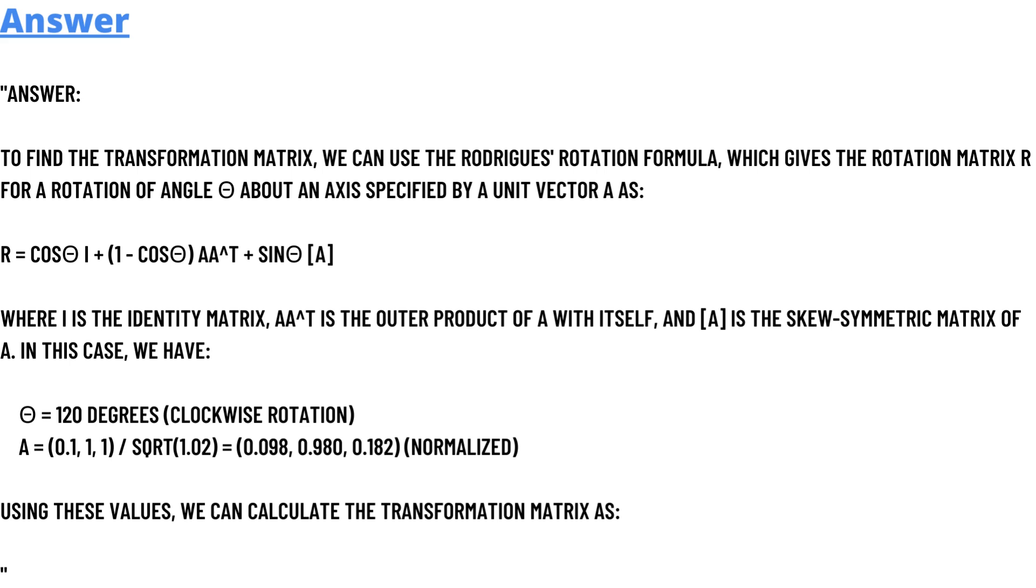The formula is given below, where I is the identity matrix, AA^T is the outer product of A with itself, and [A] is the skew-symmetric matrix of A. In this case we have the formula given below.